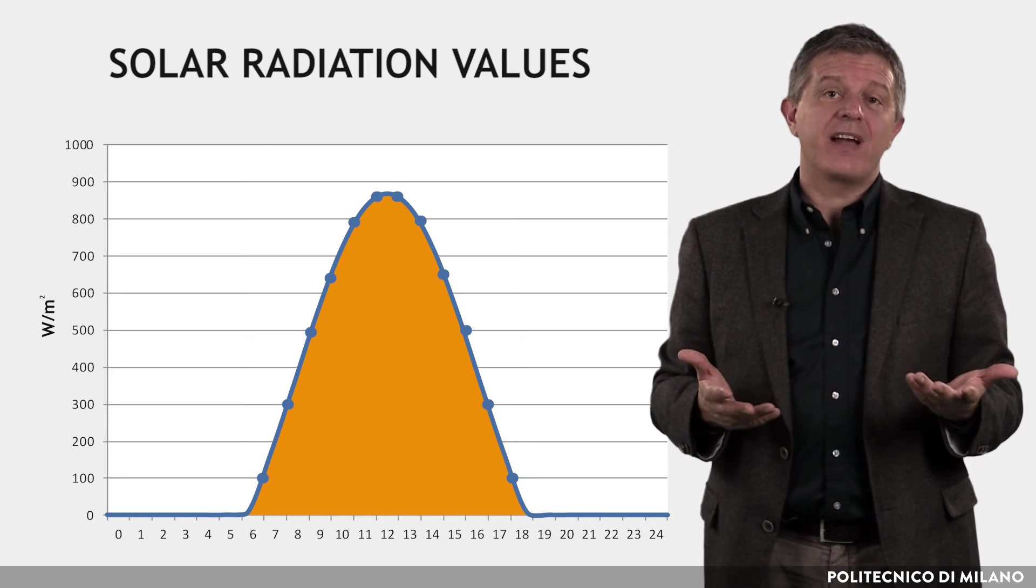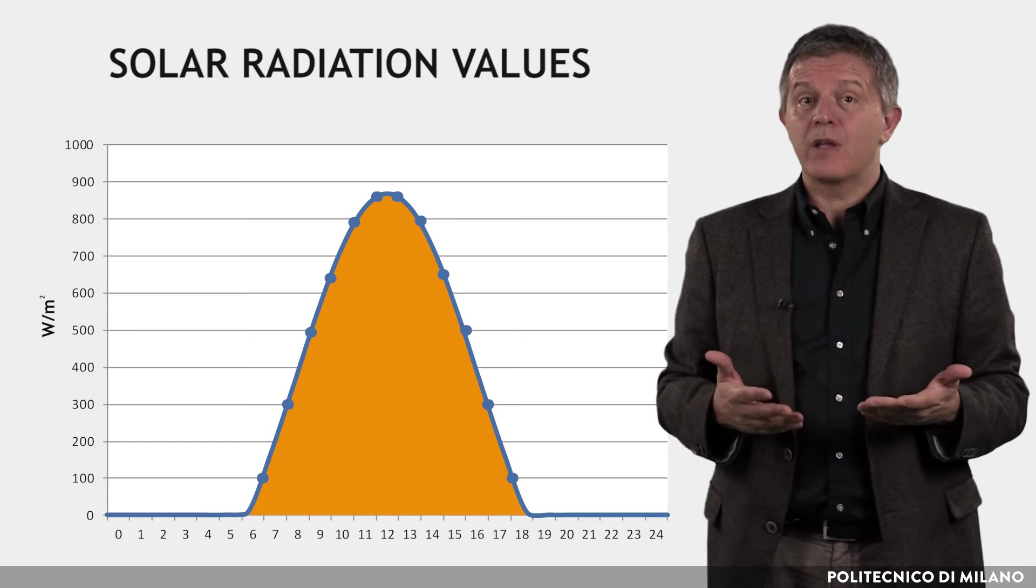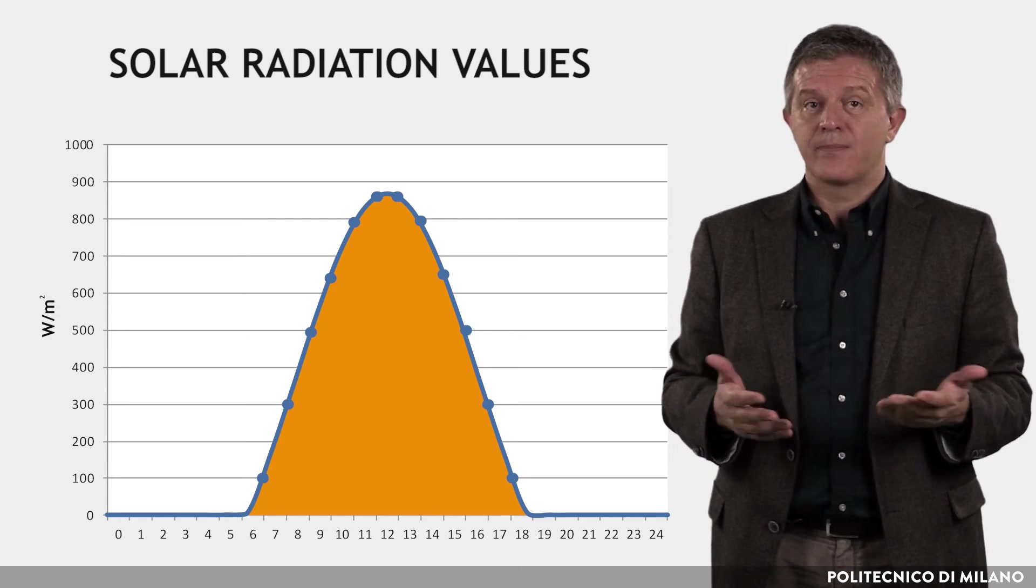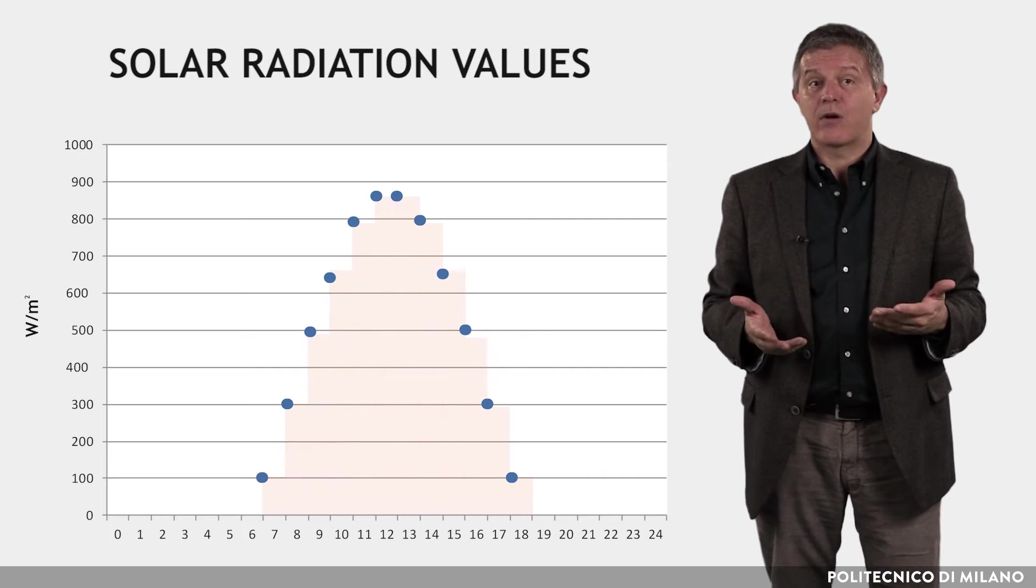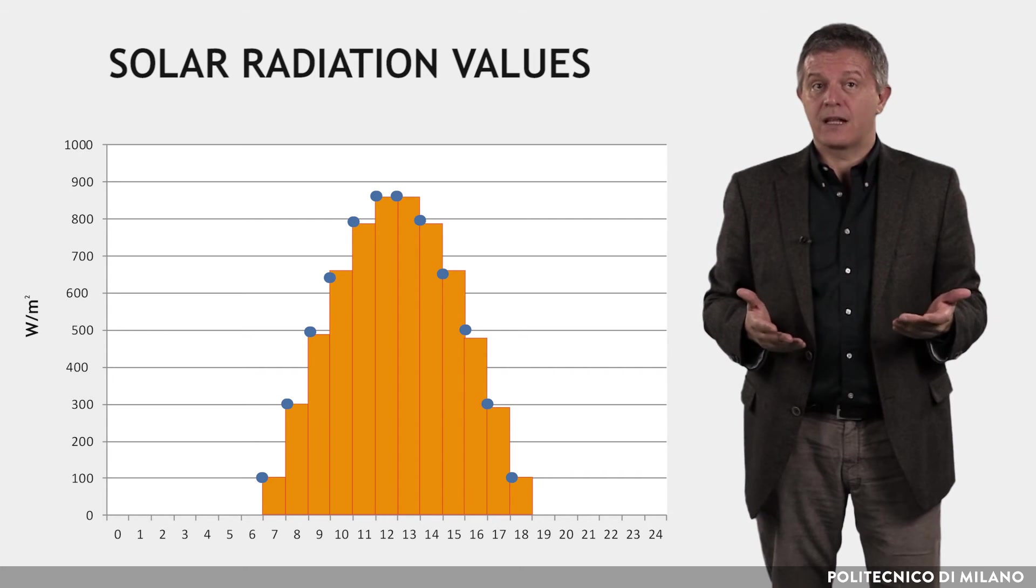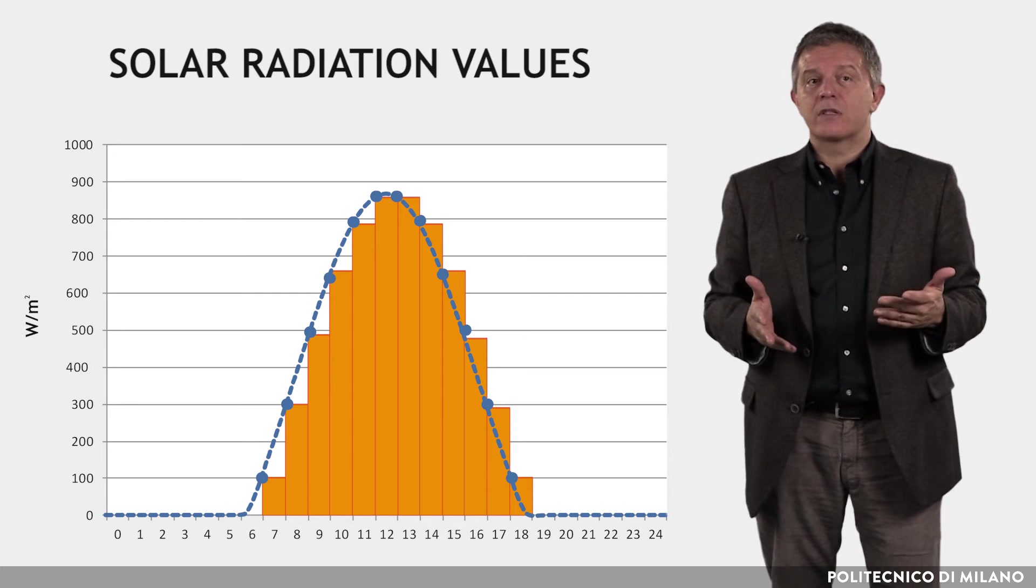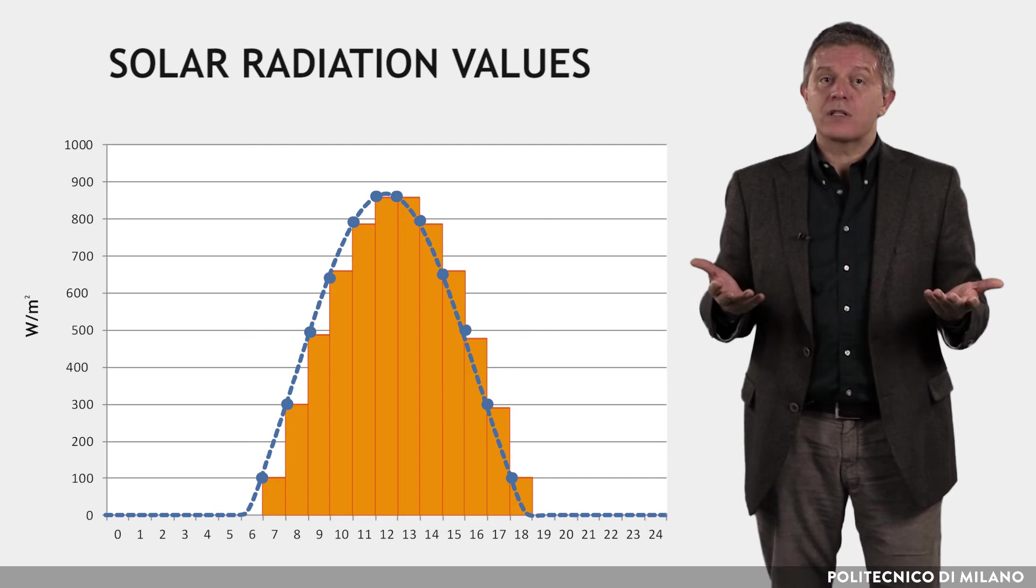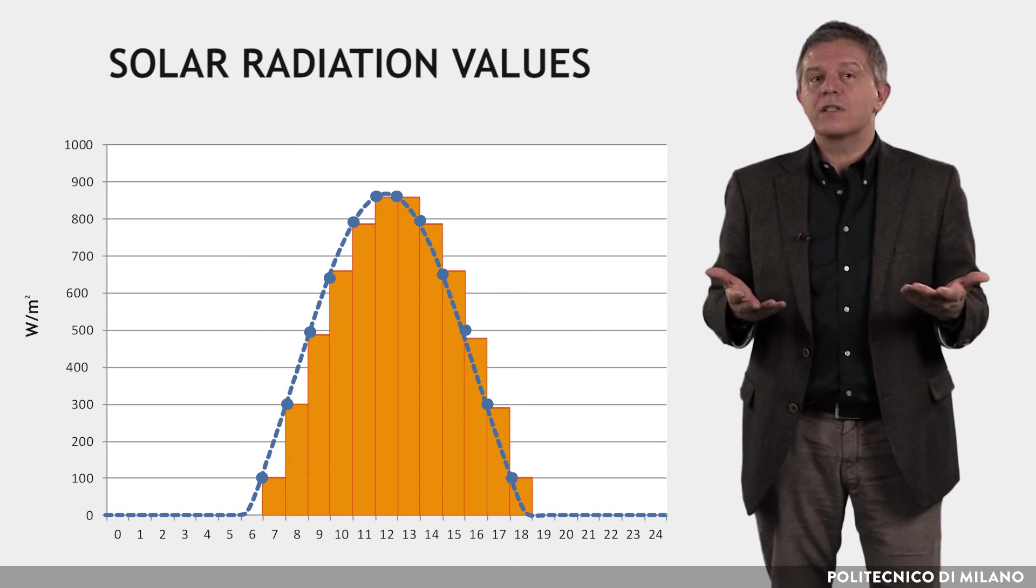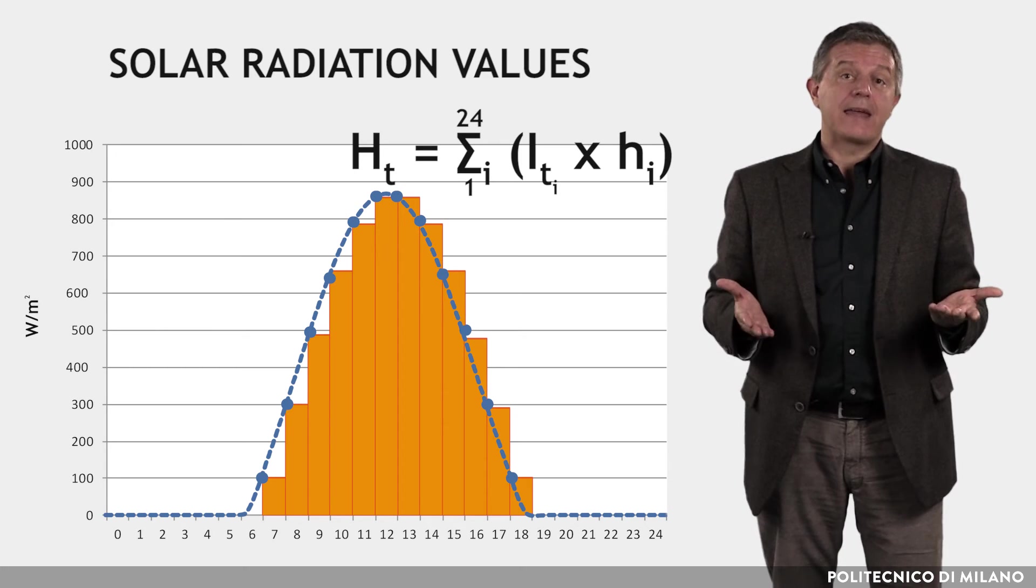Otherwise, by applying a simplified method, it is possible to obtain daily values of irradiation from the hourly values of irradiance. In this case, you calculate the irradiance values hour by hour, and assuming that they remain constant for the next hour, you can switch from watts to watt-hours. As you can see in the graph, underestimations in the morning hours are offset by afternoon overestimations. The sum of the hourly values provides the daily total.